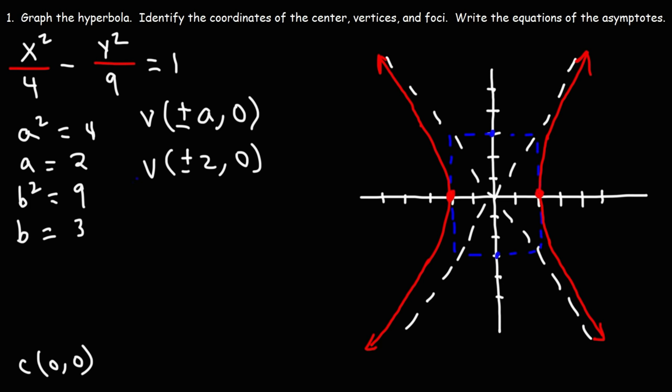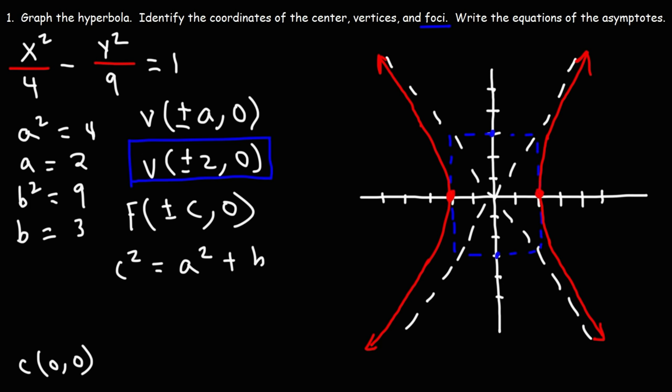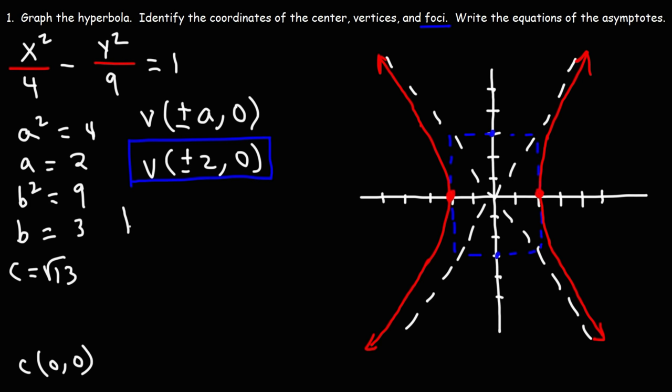Now let's focus on the coordinates of the foci, which will be plus or minus c comma 0. We use c squared equals a squared plus b squared. A squared is 4, b squared is 9, so c squared is 13, which means c equals the square root of 13. So the coordinates of the foci are plus or minus root 13 comma 0. The square root of 13 is approximately 3.6. As you can see, the hyperbola always opens towards the focal points.